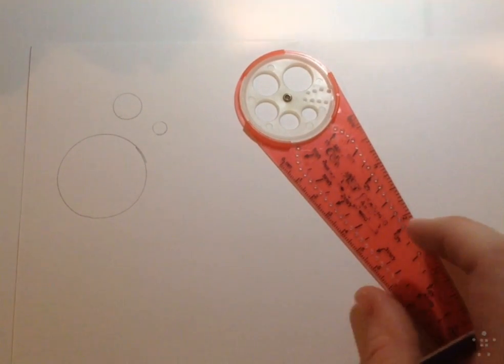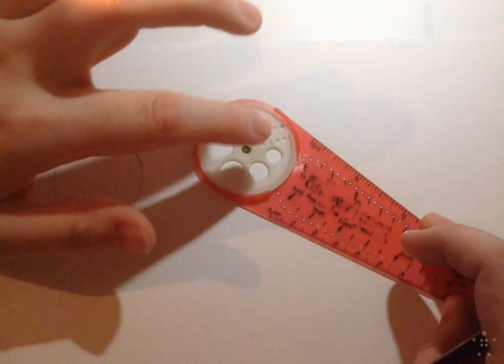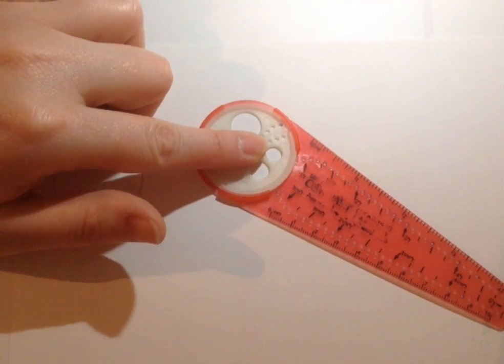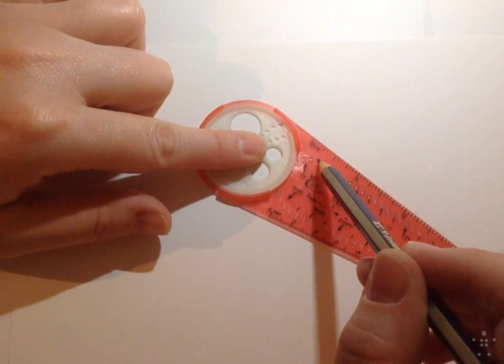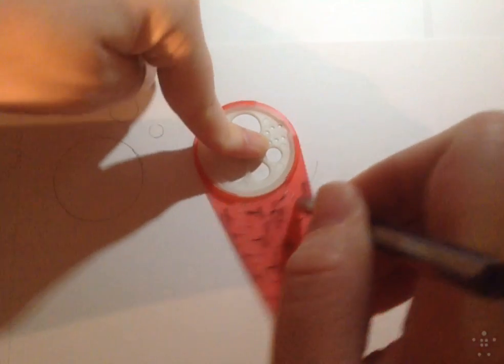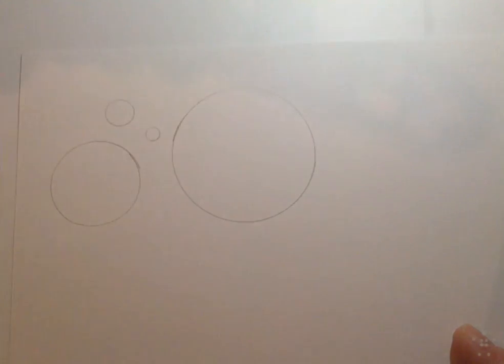And then if you want an even larger circle, you hold the center part here and put your pencil in one of these holes and you take it around. And you get a very large circle.